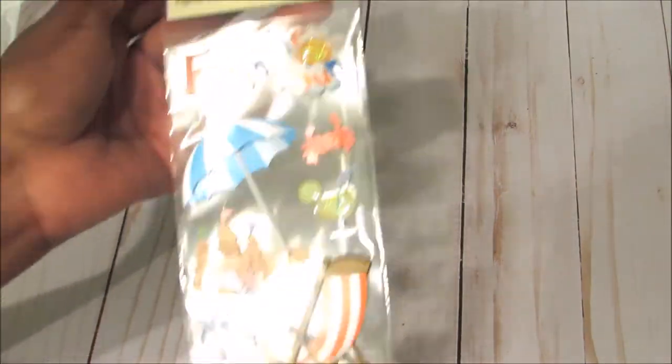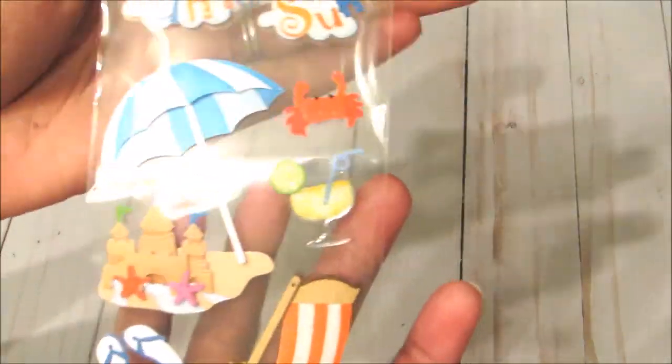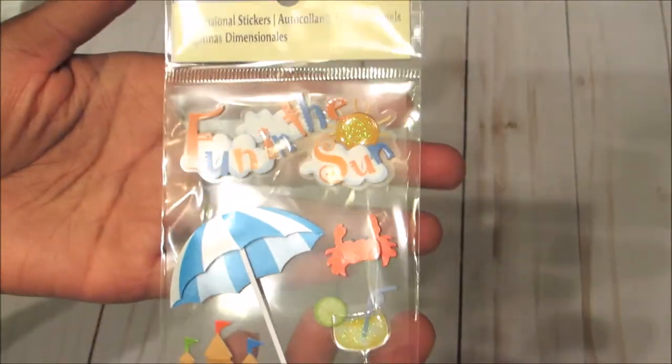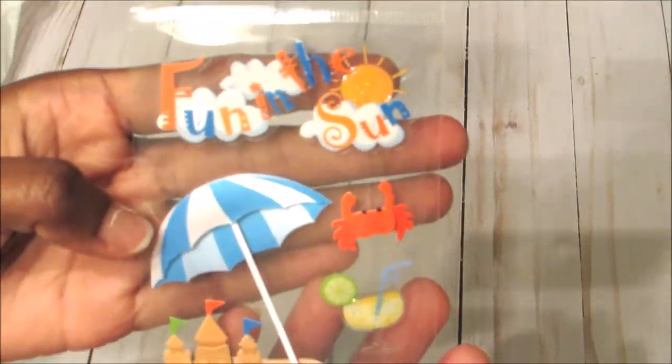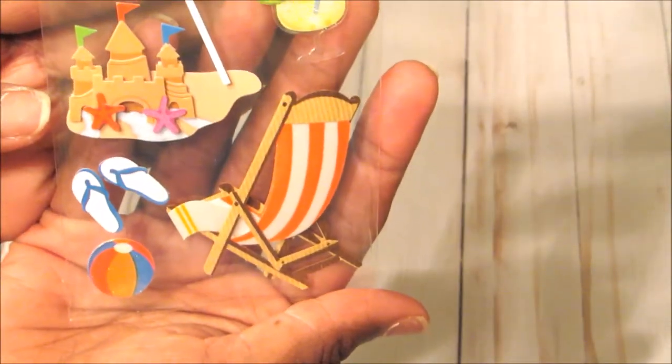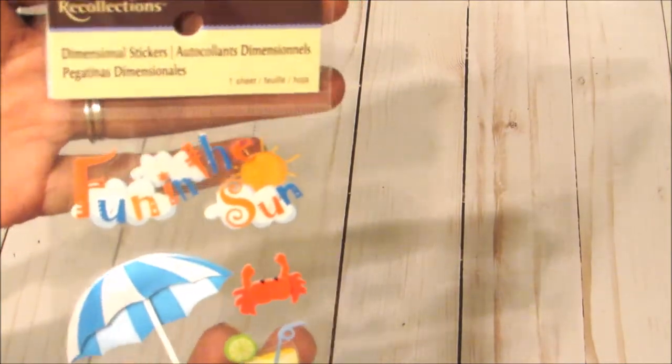This is another Recollections sticker. This little one says fun in the sun. You can see that. And it has this umbrella and this crab and some different things there. And I thought this would be good. Summer is coming very quickly. So I am super duper excited about that. So I picked that up.